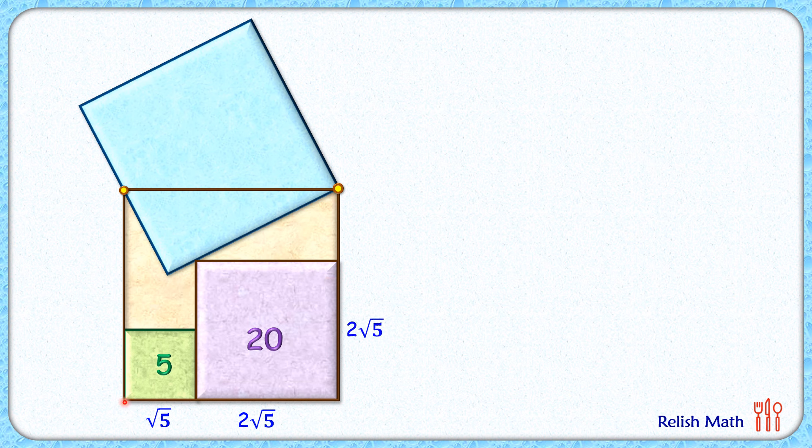The side length of the brown square will be root 5 plus 2 root 5 or 3 root 5 centimeter, and thus the remaining height of the brown square will be root 5 centimeter. This side length of the purple square is 2 root 5 centimeter.